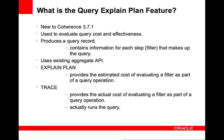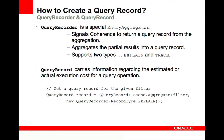Explain plan returns a record that contains the steps or filters that would be evaluated for the query, along with information about each step like the estimated cost to evaluate each filter. Trace actually executes the query and returns a record containing the actual steps of the query. The information for each step includes the effectiveness of applying that filter — in other words, how well the application of the filter reduced the set of entries being evaluated for the query.